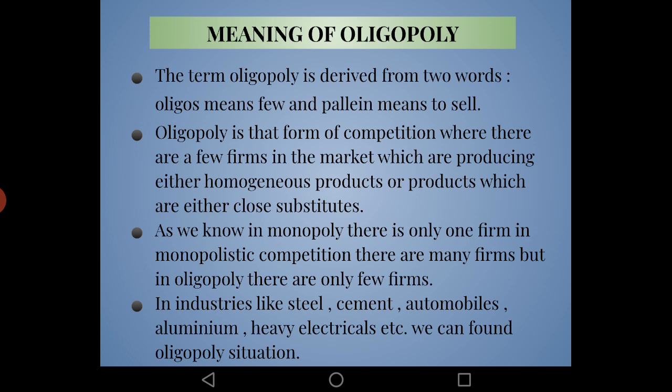Oligopoly is different from perfect competition and monopolistic competition, where there are many sellers, and from monopoly, where there is only one seller. Under oligopoly there are few sellers — a small number — who manufacture either identical or similar products, or products which are close substitutes. We can find oligopoly in industries like steel, cement, automobiles, aluminium, and heavy electrical.